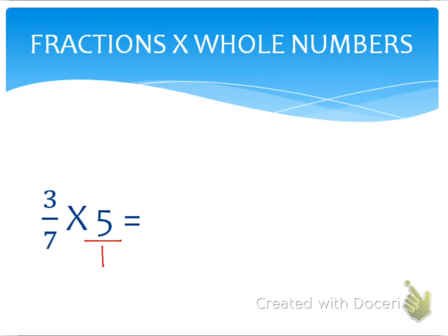So I'm going to rewrite my problem here. I have three-sevenths multiplied by five over one.